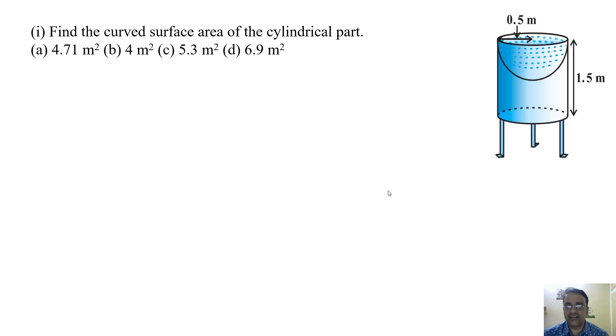Find the curved surface area of the cylindrical part. We know that the curved surface area of cylinder is given by formula 2πrh. Now the value of π is not given, so 22 by 7, and the radius is given 0.5 meter and height is given 1.5. So we will get 2 × 22/7 × 0.5 × 1.5.